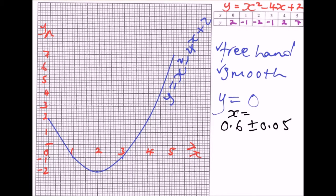Again, the graph cuts the x-axis at 3.4, around 3.4, 3.35. So we say x is 3.4 plus or minus the allowance of 0.05. So these are the values of x when y is equal to 0. That's how you do it.